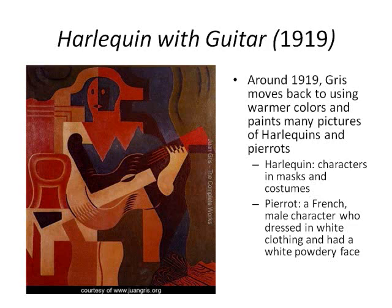In 1919, Juan Gris moved yet further away from still lifes, and the majority of his paintings were of Harlequins — characters in masks and costumes — and Pierrots, a French male character who dressed in white clothing and had a white, powdery face. His painting called Harlequin with Guitar, which was done in 1919, shows a Harlequin playing the guitar. Gris moves back to using warmer colors, although not bright colors. The Harlequin is fractured in different planes, still true to the techniques of Cubism.